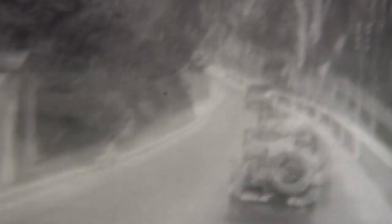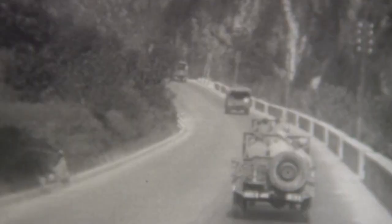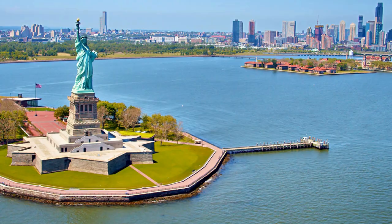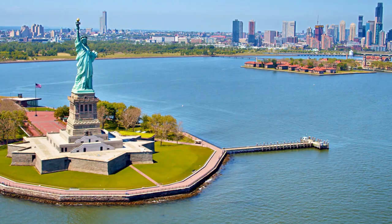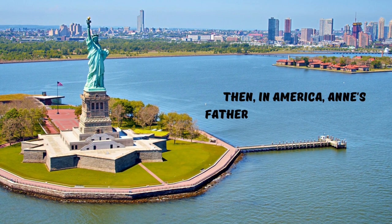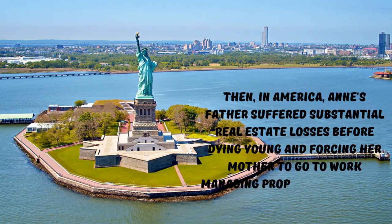Back in Poland, around the First World War, Lawrence had heard that the Scheibers had gold buried in the ground, but they traded it for paper money that became worthless. Then in America, Anne's father suffered substantial real estate losses before dying young and forcing her mother to go to work managing property to support her nine children. For Anne, at least, the money anxiety that darkened her early years was deepened by the family's European values. Whatever money the family did get went to educate the four sons. The five daughters were on their own.